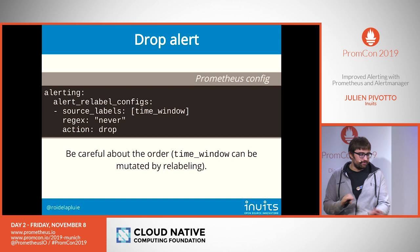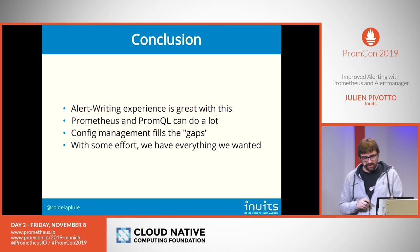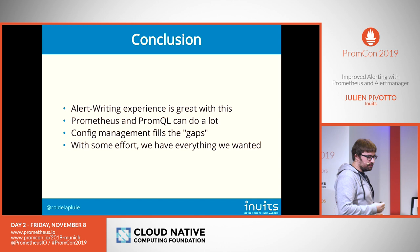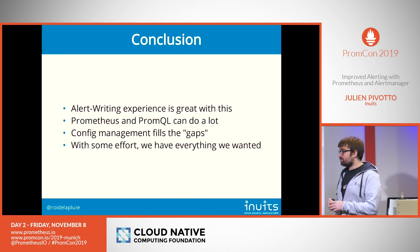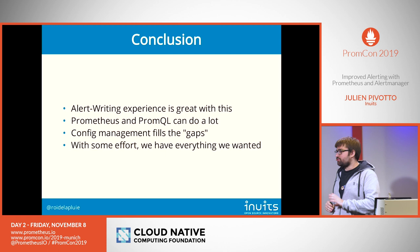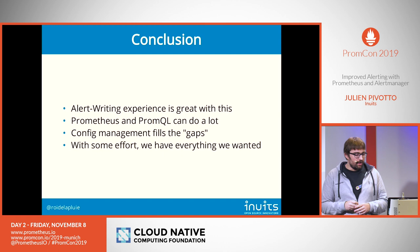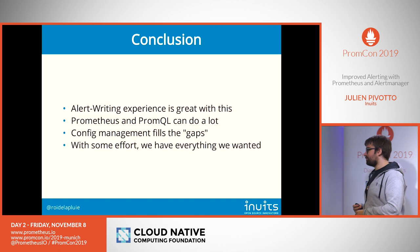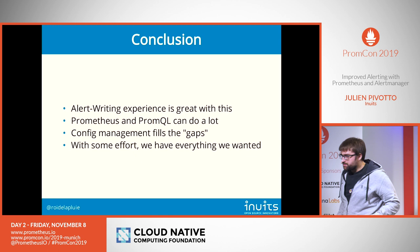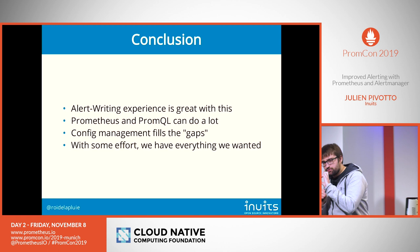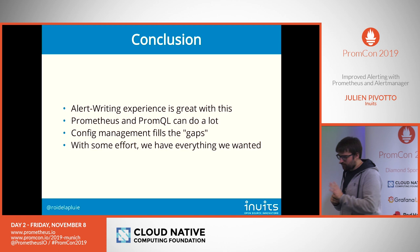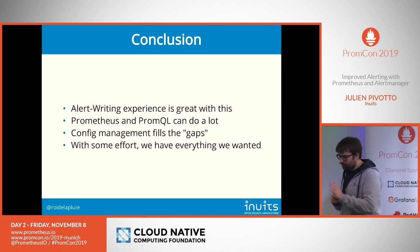Conclusion: we now have a good alert writing experience. We are quite safe about what we do and know exactly what each alert will do. It's easy to send business alerts when we want them sent. Prometheus can do a lot. We use config management to fill the gaps — a very large configuration is generated from a quite small input. Don't do this without a templating system in place, because you will go mad. It took us some time, but we got everything around it.